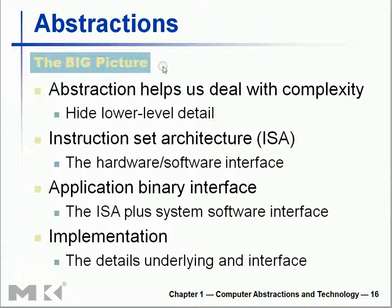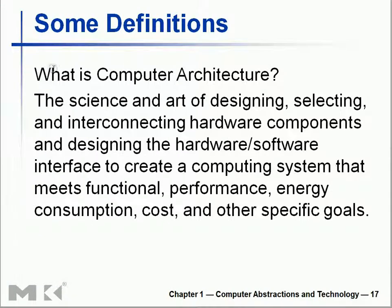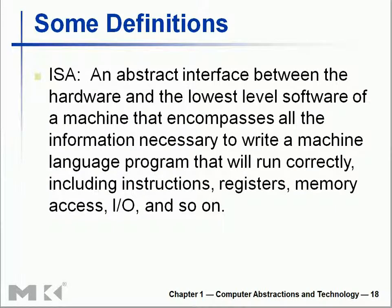Please remember these terms. Abstraction helps us deal with complexity — from high-level down to lower detail. Instruction Set Architecture, or ISA, is the interface between hardware and software — you will hear that a lot. Application Binary Interface is more than the ISA. These are the definitions of computer architecture and ISA. We will skip them for now and revisit when we discuss these things in detail — then everything will come together and the puzzles will be solved.